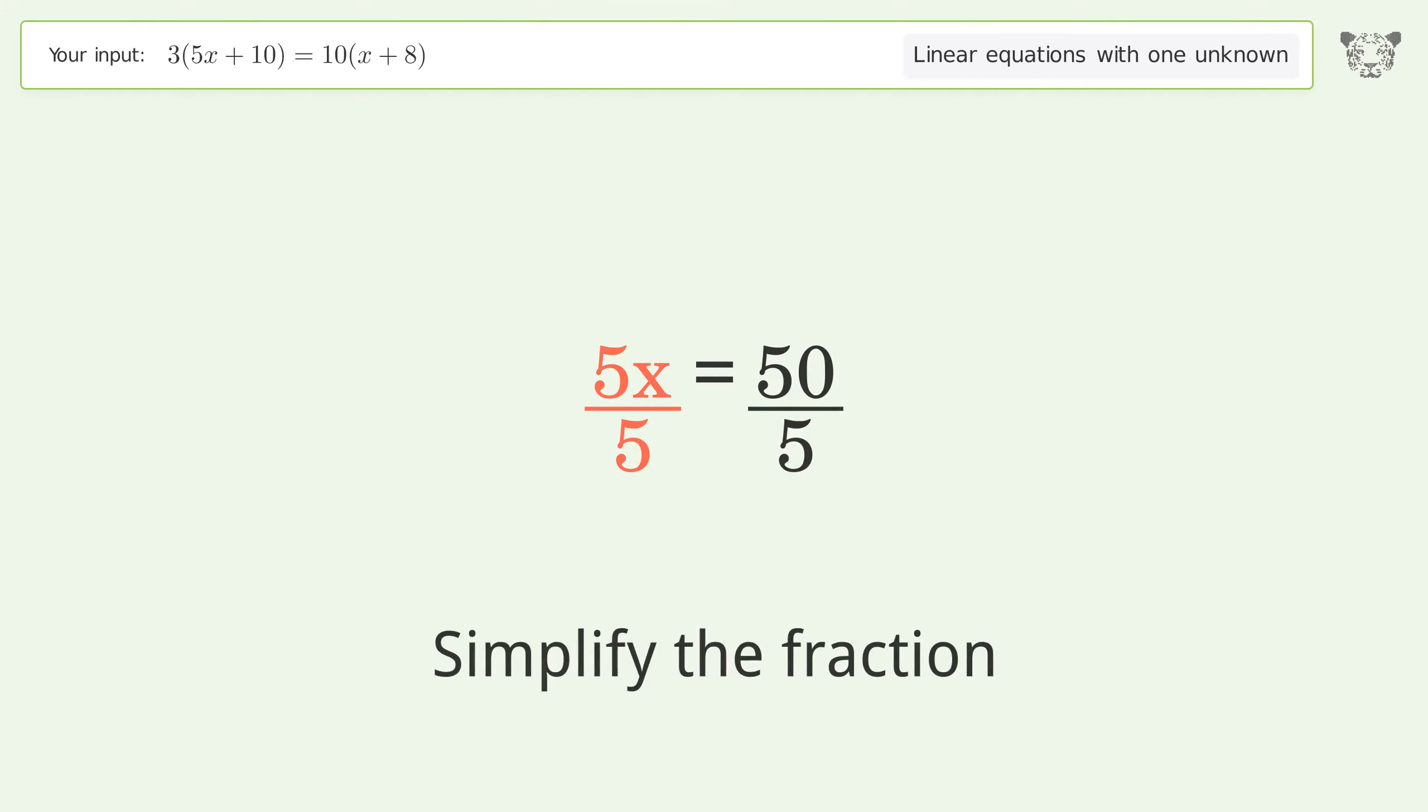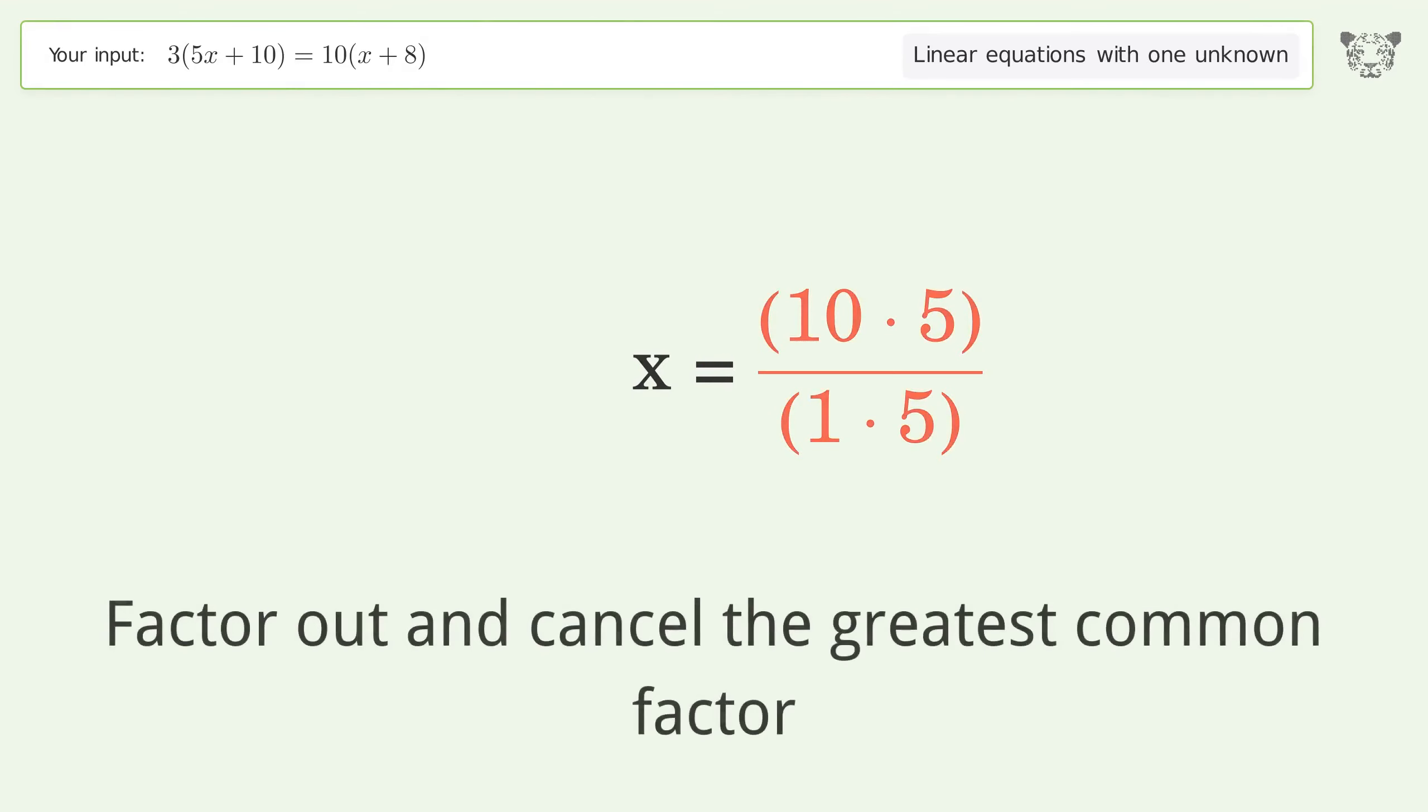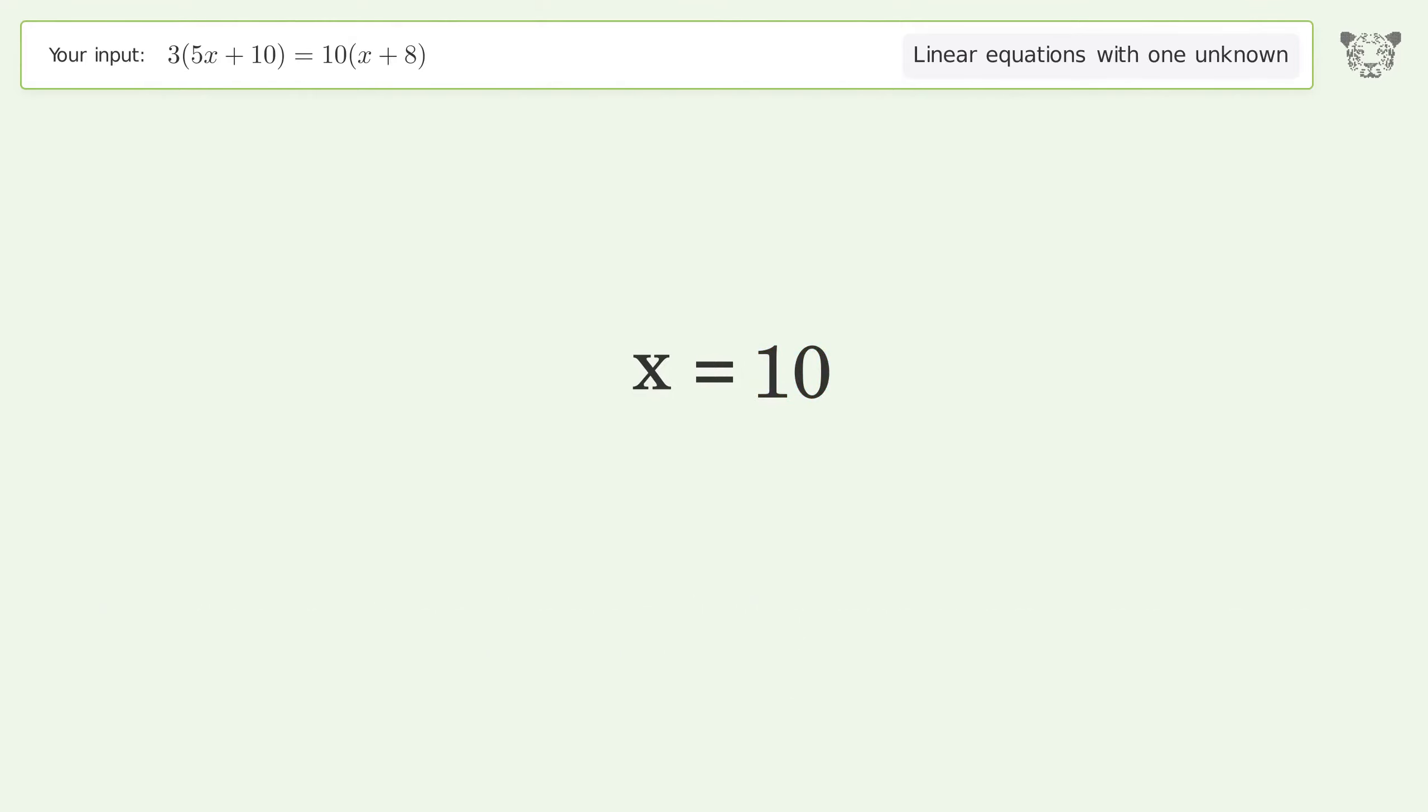Simplify the fraction. Find the greatest common factor of the numerator and denominator. Factor out and cancel the greatest common factor. The final result is x equals 10.